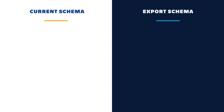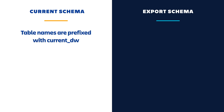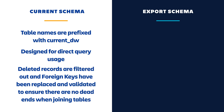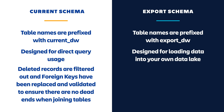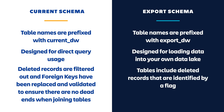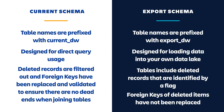What you have learned in this section is that there are two types of data schemas in Enterprise Insights: current and export. The current schema has table names prefixed with current_DW, is designed for direct query usage, deleted records are filtered out, and foreign keys have been replaced and validated to ensure there are no dead ends when joining tables. The export schema has table names prefixed with export_DW, is designed for loading data into your own data lake or data warehouse, includes deleted records identified with a flag, and foreign keys of deleted items have not been replaced.